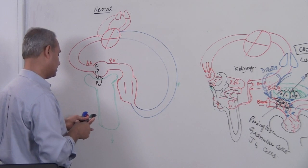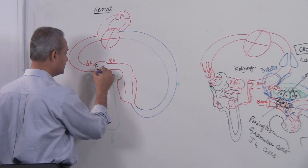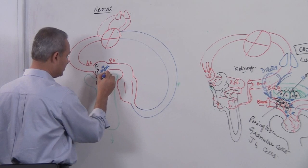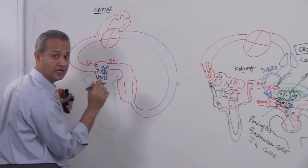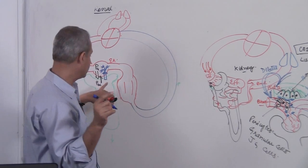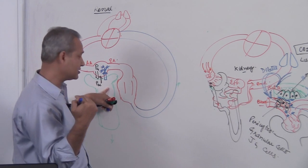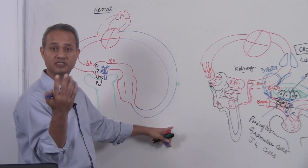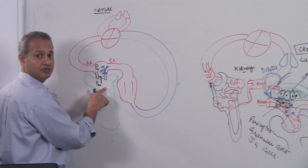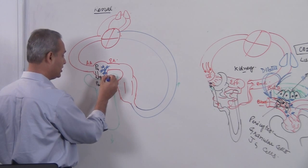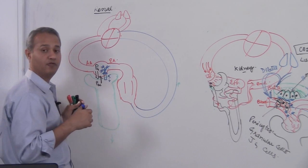Oncotic pressure is the pressure exerted by proteins. The proteins sitting here pull substances towards them. In a normal physiological situation, proteins do not cross the capillaries and do not come out — and that is not just for the kidney, that is also for the systemic capillaries. So no protein here means nothing is pulling this way. These are the three forces at play.